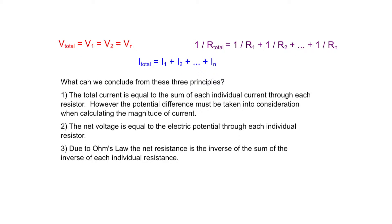Let's review parallel circuits. One, the total current is equal to the sum of each individual current through each resistor; however, the potential difference must be taken into consideration while calculating the magnitude of current. Two, the net voltage is equal to the electric potential through each individual resistor. Three, due to Ohm's law, the net resistance is the inverse of the sum of the inverse of each individual resistance.